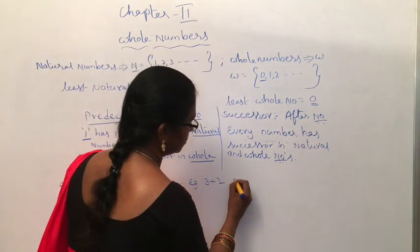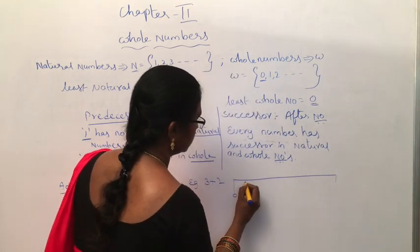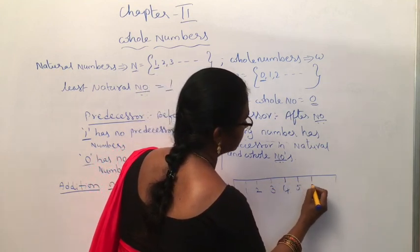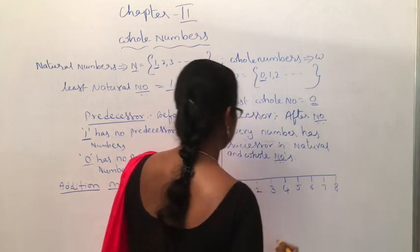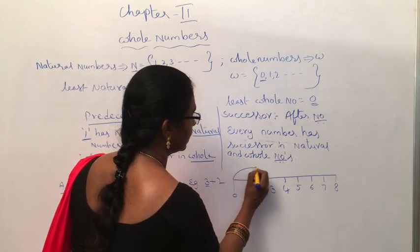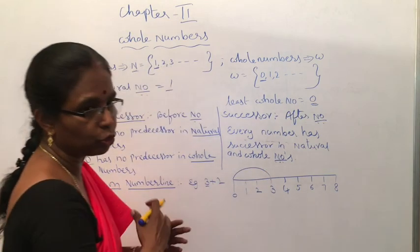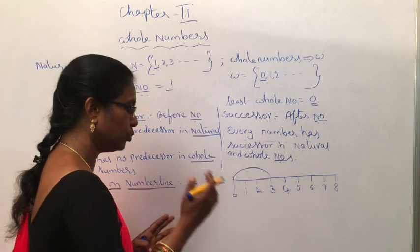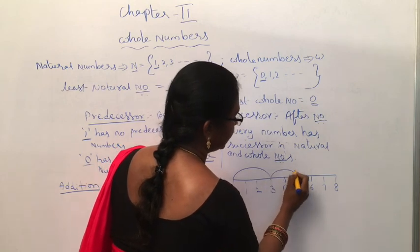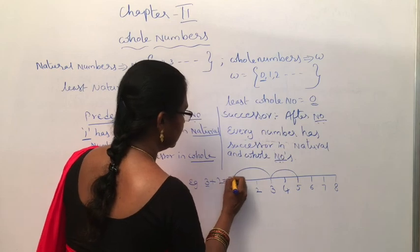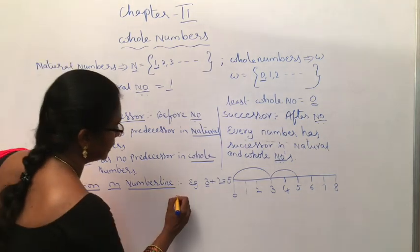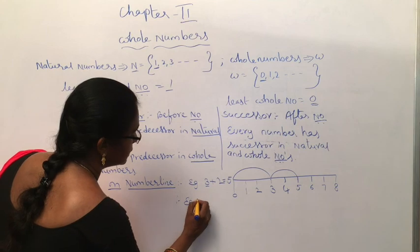First, draw the number line from 0 to 8: 0, 1, 2, 3, 4, 5, 6, 7, 8. Now take 3 — from 0 count forward to 3 and draw a mark. Plus means we move to the right side. How many numbers do we move? Two steps: 1, 2. It ends at 5. So the answer is 5. This is addition on the number line.